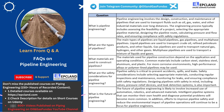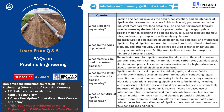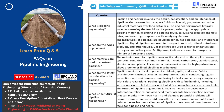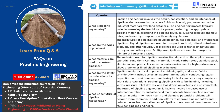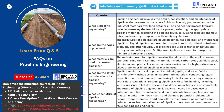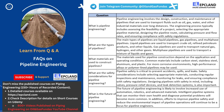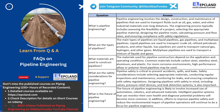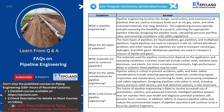Finally, ensuring compliance with safety regulations is essential for pipeline engineering. Regulations and standards exist to ensure that pipelines are designed, constructed, and maintained in a safe and responsible manner. Pipeline engineers must adhere to these regulations to ensure the safety of the pipeline and the surrounding environment. In conclusion, ensuring appropriate materials, conducting regular inspections and maintenance, monitoring for leaks, designing pipelines with safety features, and complying with safety regulations are all essential to prevent accidents and protect the environment.